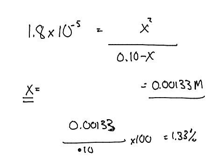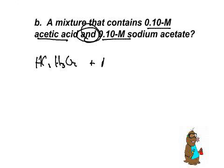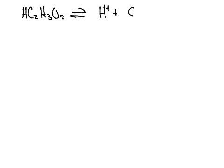We get our solver out. X times X over 0.10 minus X. X is equal to the concentration of the hydrogen. We're looking for the percent dissociation. X equals 0.00133 molar. Percent dissociation, you take X and divide by the initial concentration times 100. That gives you 1.33%.